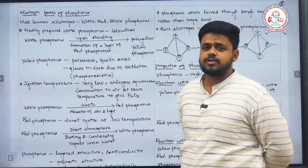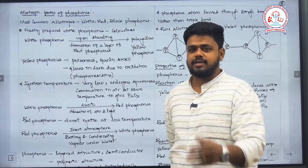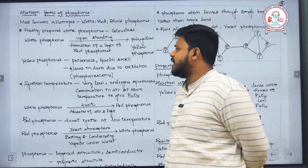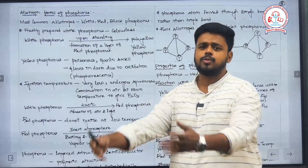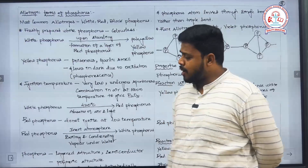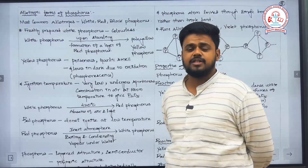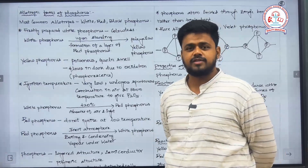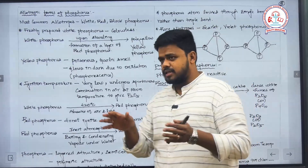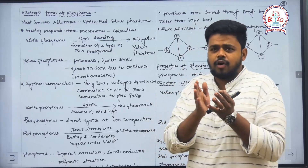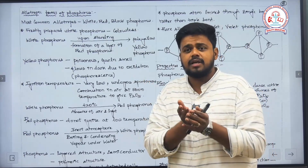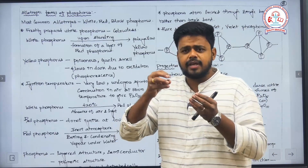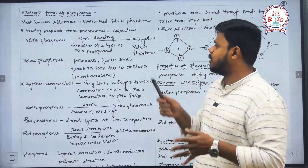The freshly prepared phosphorus is colorless, so we call it white in color. This white phosphorus will be converted into pale yellow phosphorus when it is exposed to the atmosphere. The formation of pale yellow phosphorus is because of the formation of a red layer over the first layer of white phosphorus, so it appears as pale yellow or just yellow phosphorus.